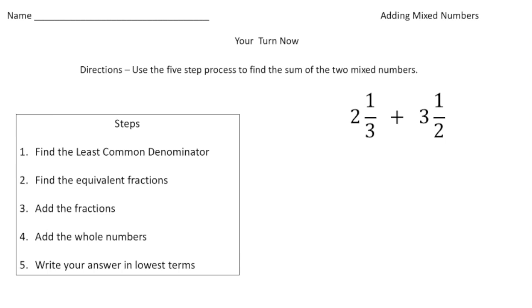Alright welcome back. Let's see how you did on this practice problem. You had to add two and a third plus three and a half. The first thing you had to do is add one third and one half. You had to come up with the least common denominator which is going to be six, because six is the least common multiple of three and two.